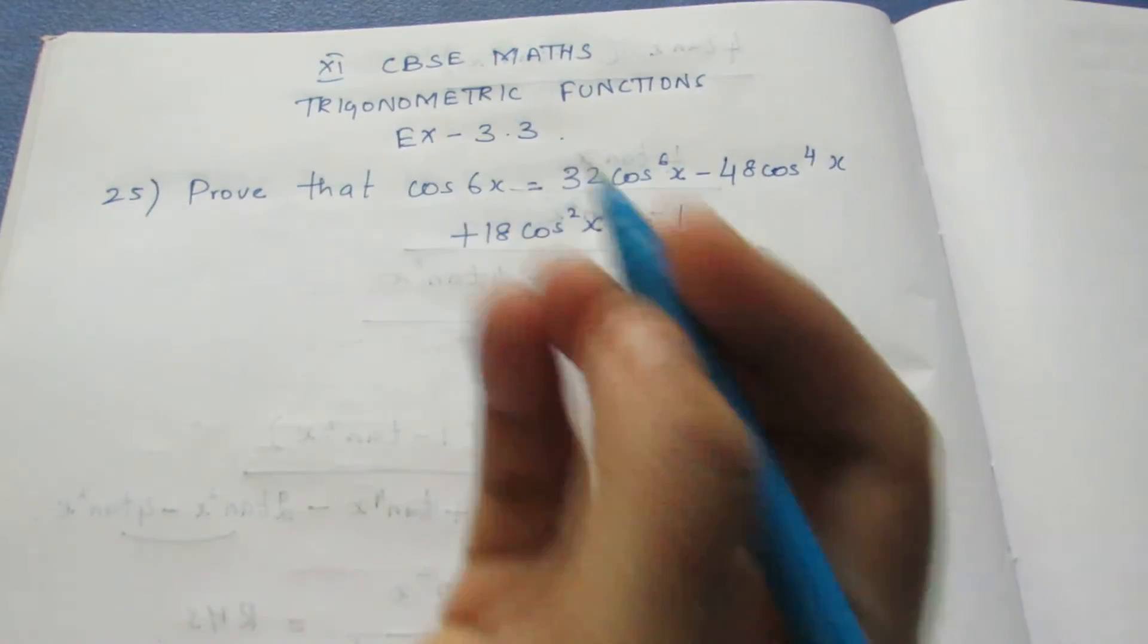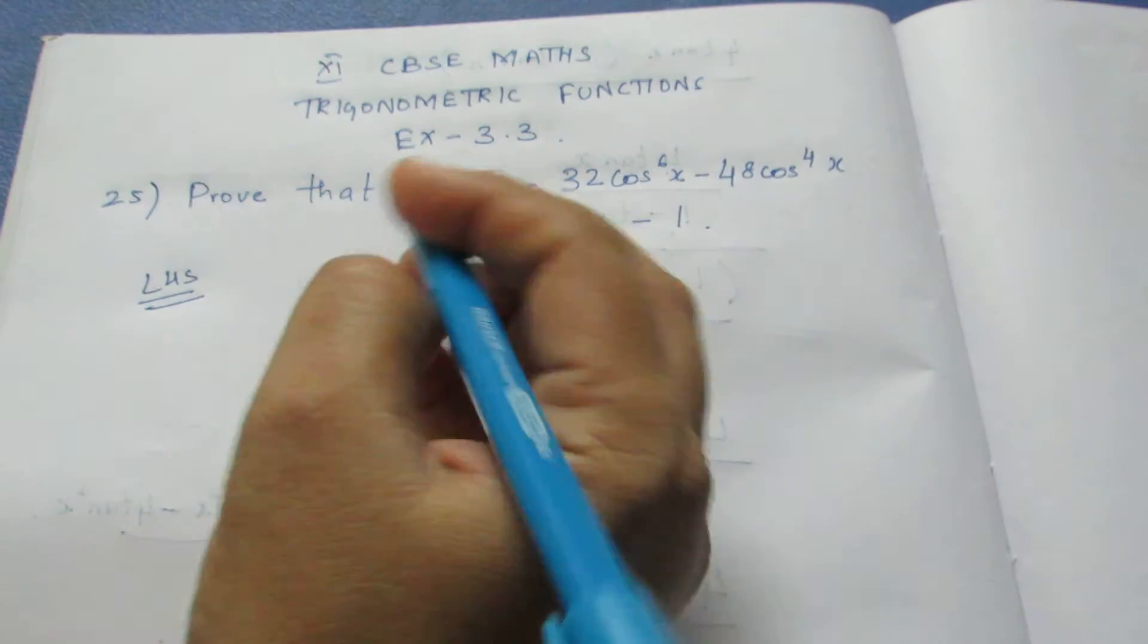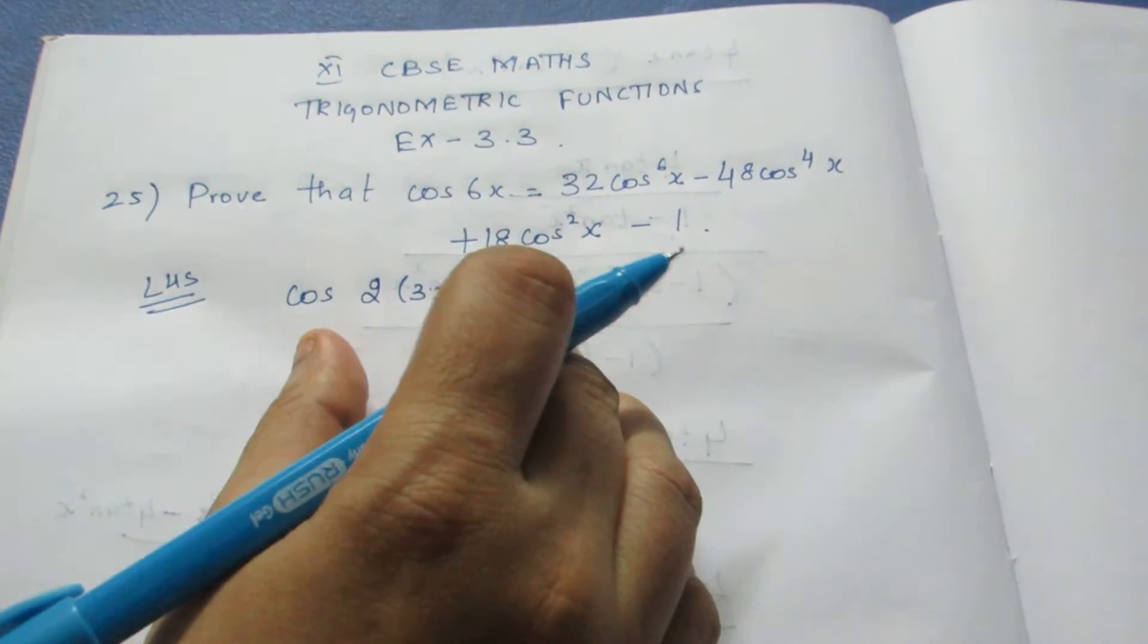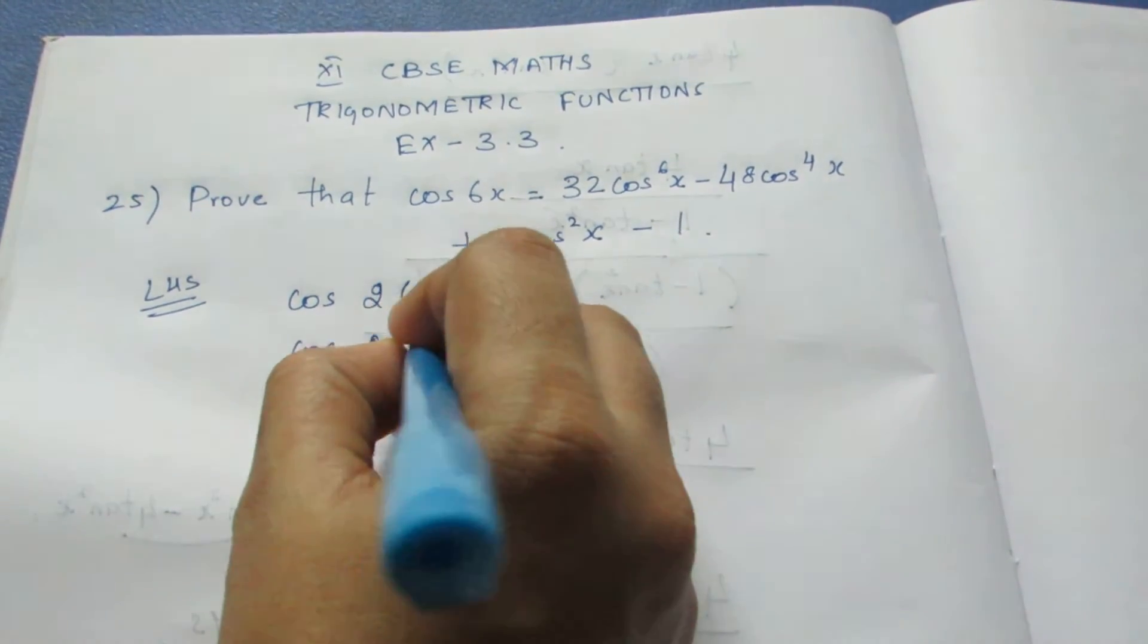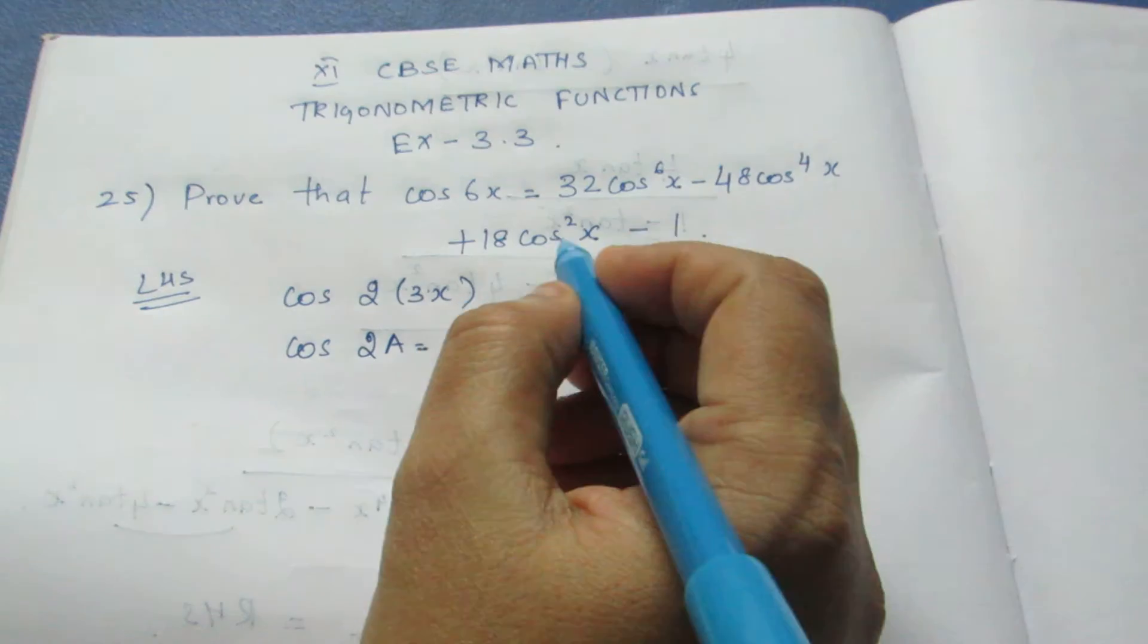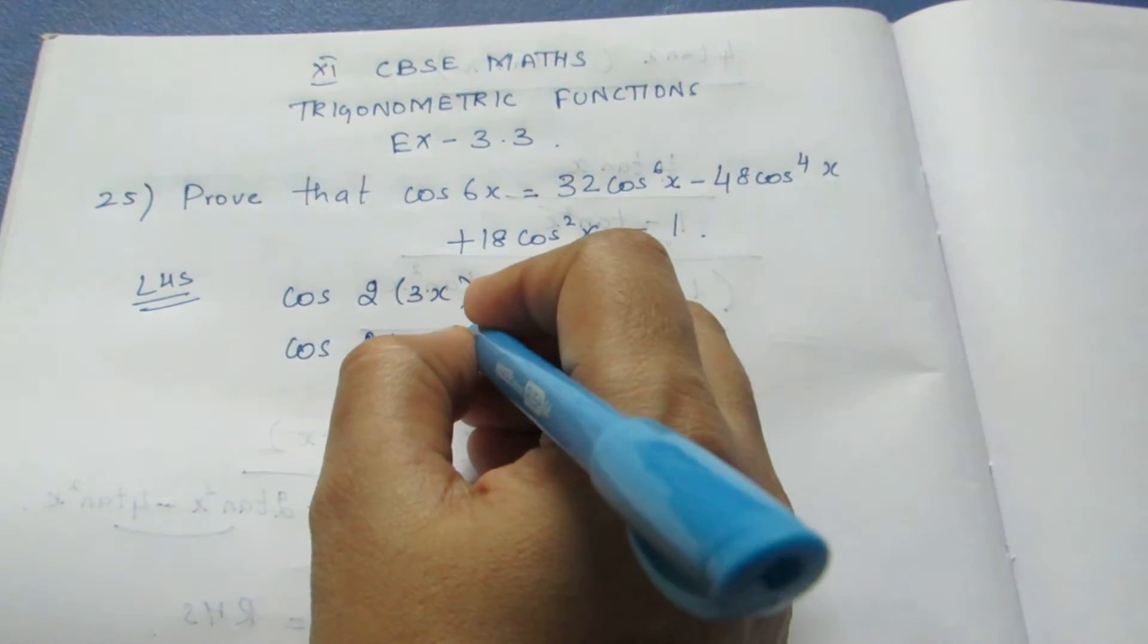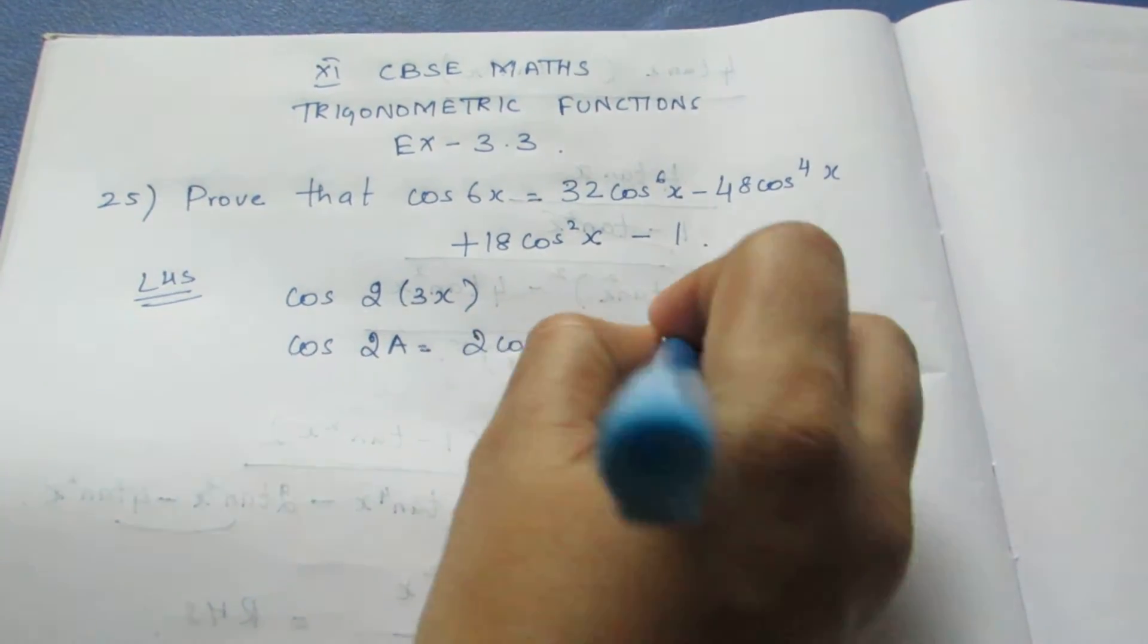Now we can write this formula. I am taking LHS and we can write cos 6x as cos 2 into 3x. We can use a double angle identity formula, cos 2a. We have many formulas but here everything is in cos, so I am going to take the cos formula, which is 2 cos²a minus 1.